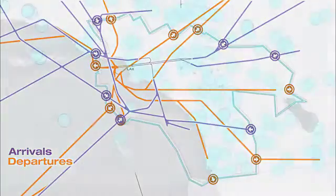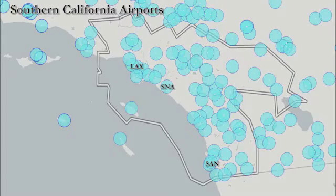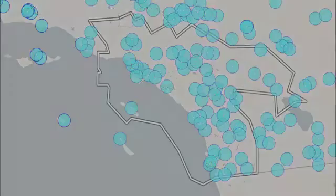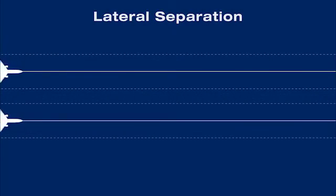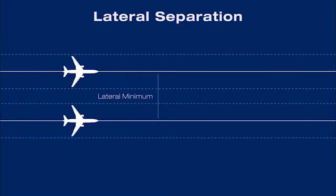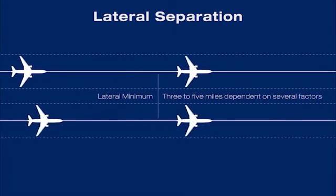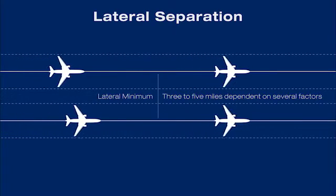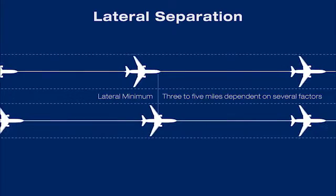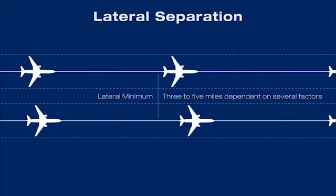Adding to this complexity in Southern California are the numerous aircraft operating at multiple surrounding airports in this crowded airspace. Aircraft flying at the same altitude must remain a minimum lateral distance from each other. In airspace surrounding airports, the minimum lateral distance is 3 miles. In higher altitude airspace, the minimum lateral distance is 5 miles.